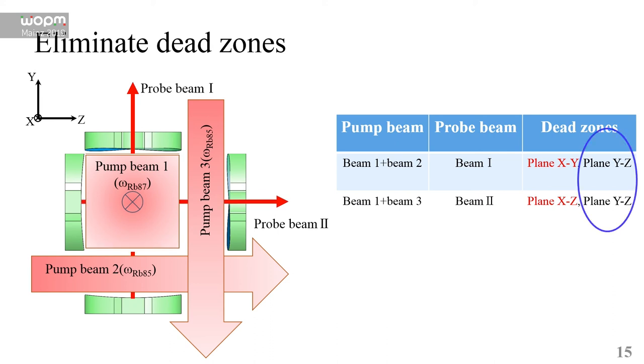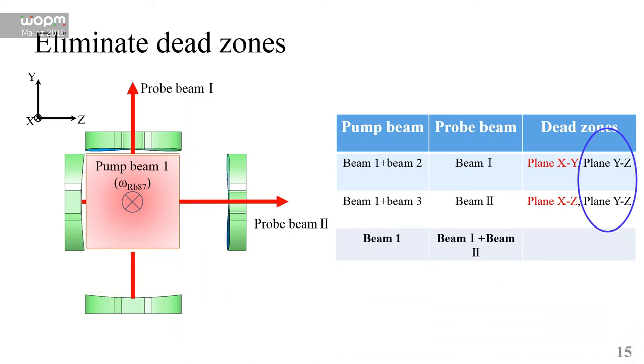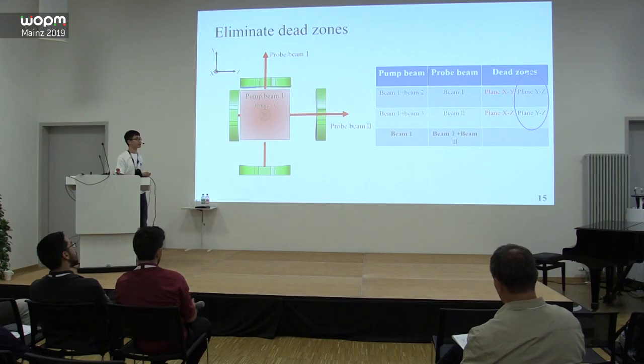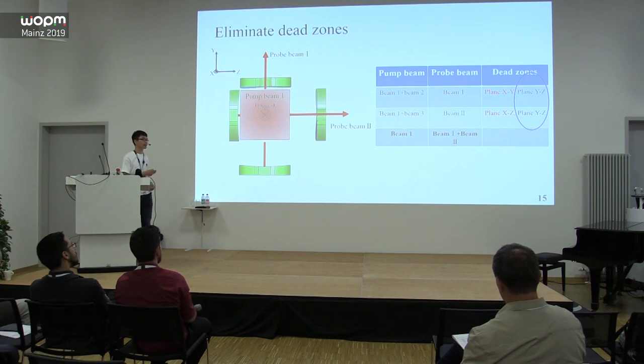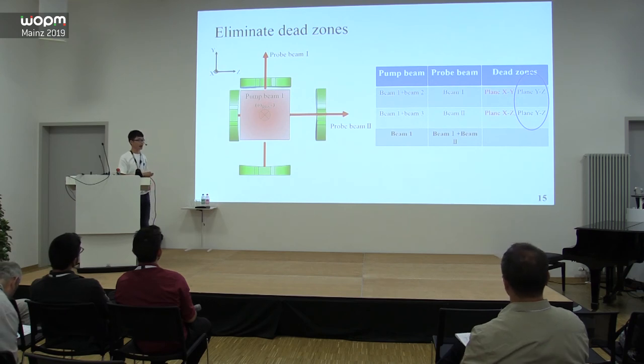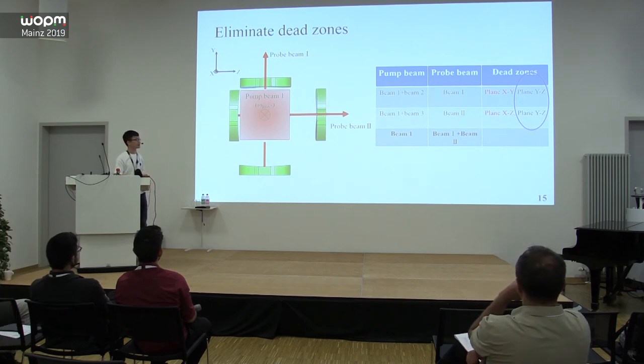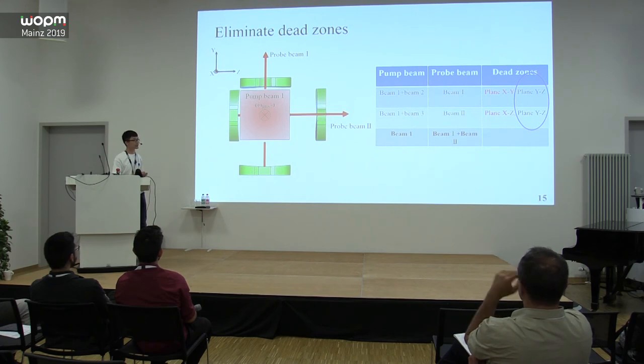But the plane YZ is still troublesome. Fortunately, we have another group of pump beams. For the same pump beam one, we can compare the signal amplitudes demodulated from pump beam one and pump beam two. We can get the exact direction since its projections on probe beam one and probe beam two are different.